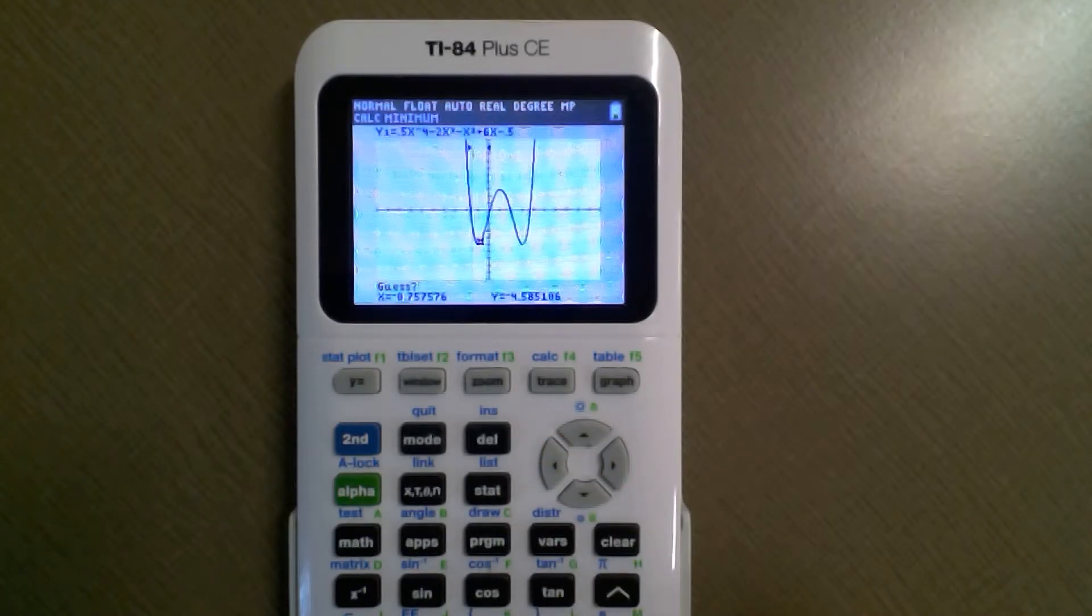You just hit guess and it'll do some calculations. We got our minimum is at negative 1.00001 and y is negative 5. Sorry it's a little grainy on the screen here.